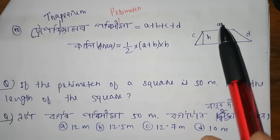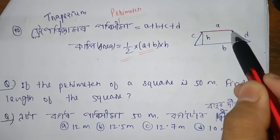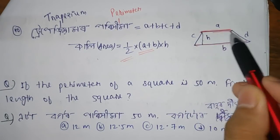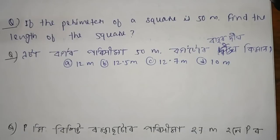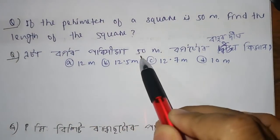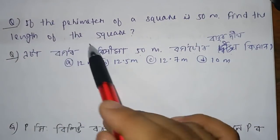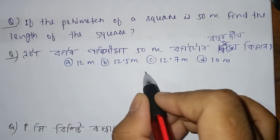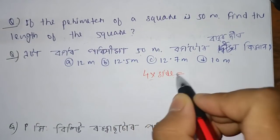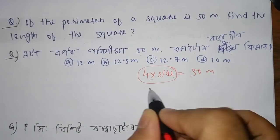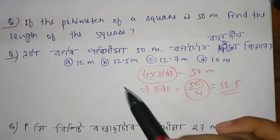The perimeter of a quadrilateral is a plus b plus c plus d. If the perimeter of the square is 50 meters, find the length of the side. The square perimeter is 4 into side. So 50 divided by 4 equals 12.5. Option B is correct.